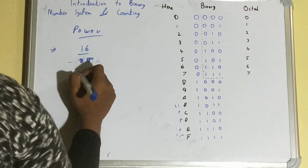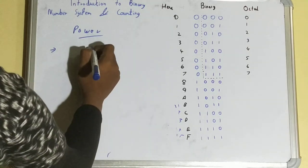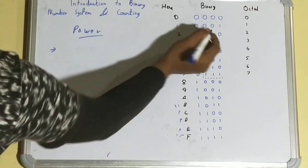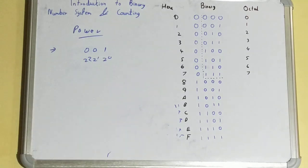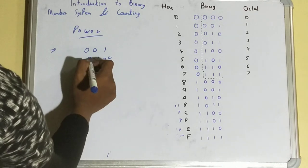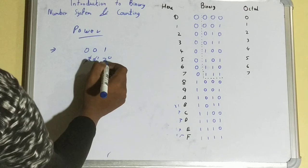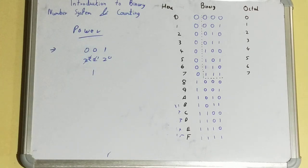For binary, the same power method applies. For example, take the binary number 001. Assign powers of 2 from right to left: 2⁰, 2¹, 2². Multiply each digit: 1 × 2⁰ = 1, 0 × 2¹ = 0, 0 × 2² = 0. The decimal equivalent is 1. This was the introduction and counting part of the binary number system — please like, subscribe, and thanks for watching.